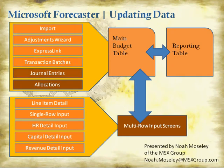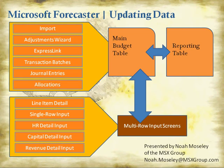Transaction batches and journal entries will let you bring balances into Forecaster. Transaction batches will let you overwrite existing balances inside Forecaster, while journal entries will adjust existing balances in Forecaster. Allocations will let you book a lump sum to a given center, and then you can run a task that will allocate that money out to other centers and accounts based on a fixed percentage or the value of some other account.